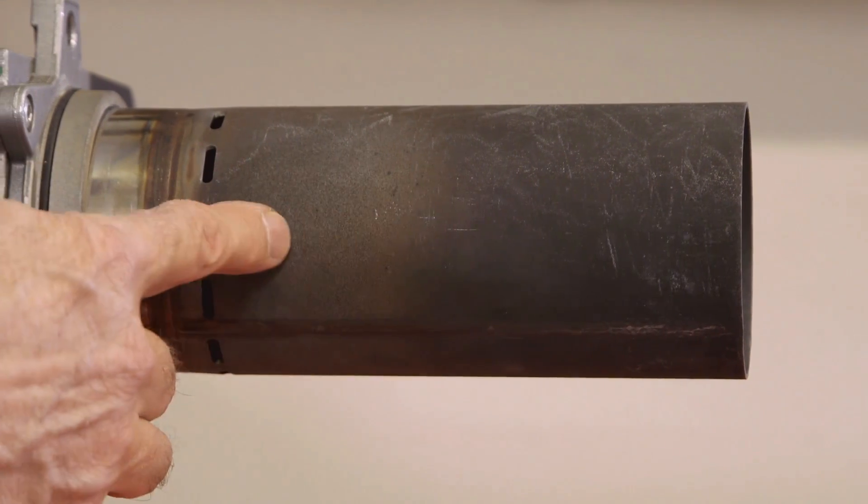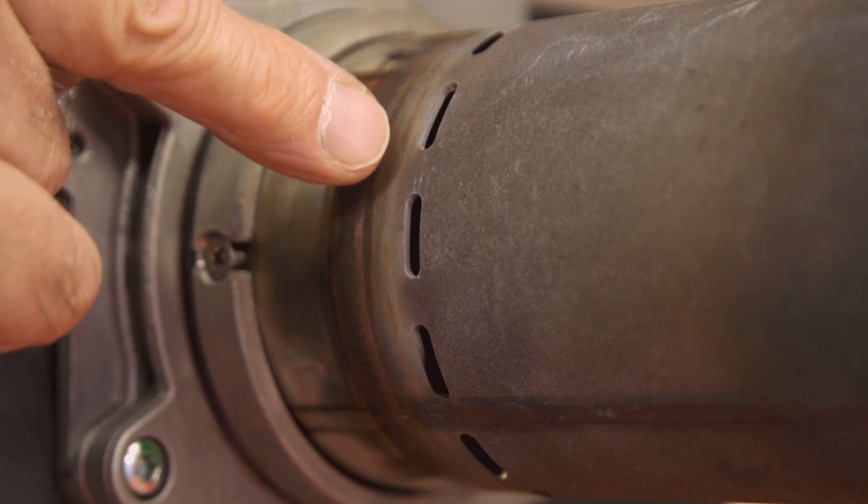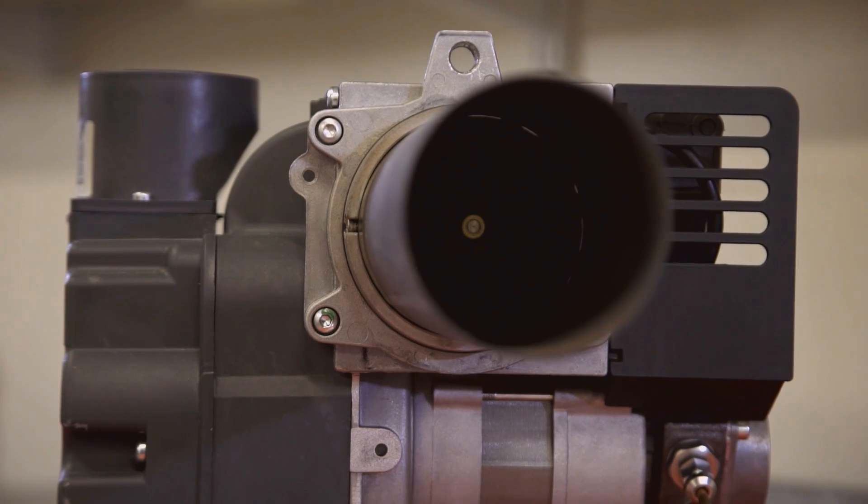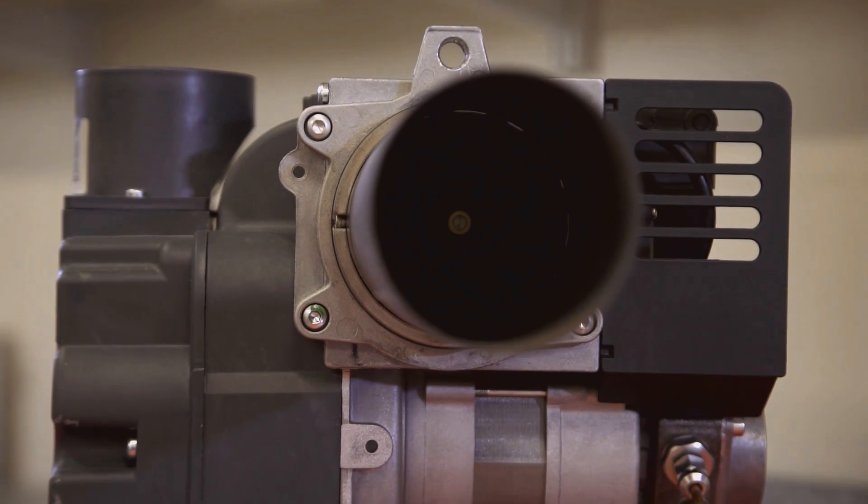The combustion head has slotted holes here. When the burner is firing the combustion gases are recirculated through these holes producing a cleaner blue flame with lower emissions.